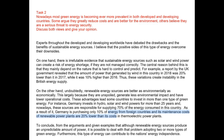'And, nowadays, these sources are responsible for supplying 70% of the energy consumed in this country.' Your punctuation is a bit off — it should be 'for 25 years, and' then no comma, because that's connecting to the second part. 'As a result of this' — not 'of it' — 'Germany is purchasing only 10% of energy from foreign countries. Its maintenance costs for renewable power plants are 20% lower than its cost in thermoelectric power plants.' Very good — you've supported your argument very well there with some good statistics.